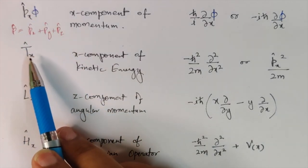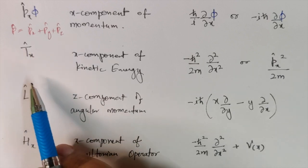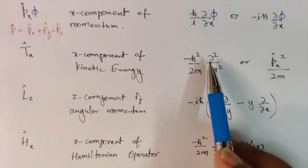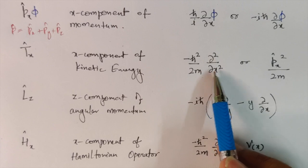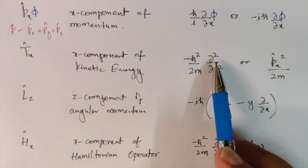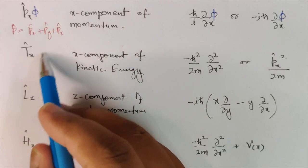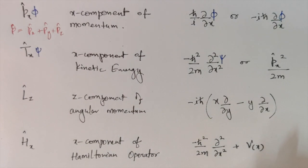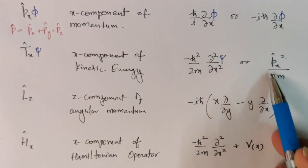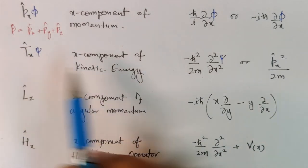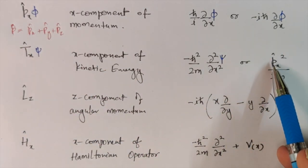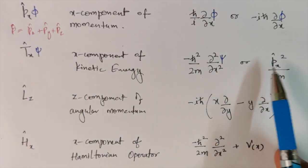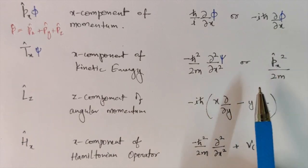The kinetic energy operator (x-component) is given by −ℏ²/2m · ∂²/∂x². You apply it on a wave function ψ. Another form of the kinetic energy operator is px²/2m, written in terms of the momentum operator. This shows how the kinetic energy operator can be expressed using the momentum operator.